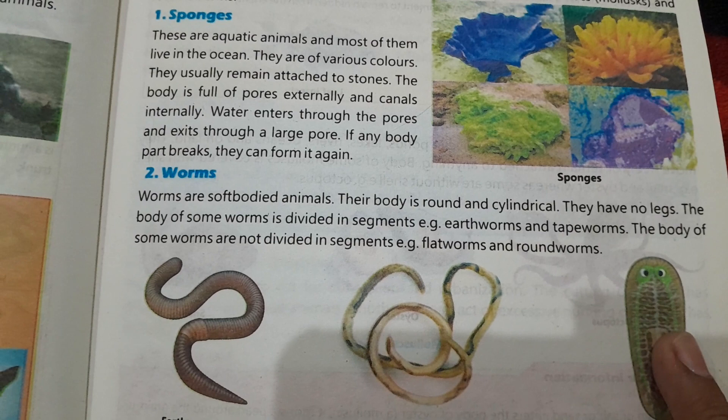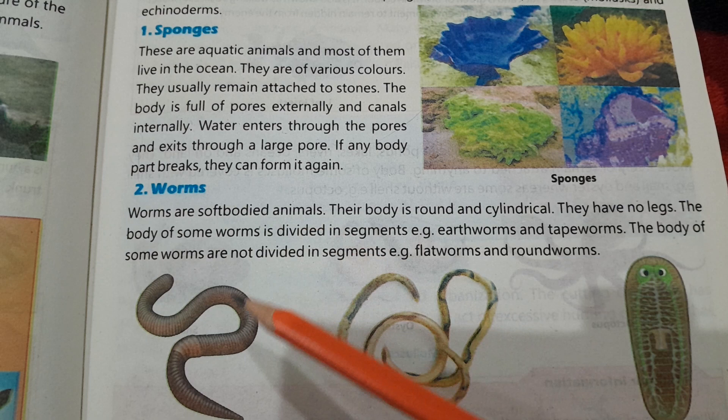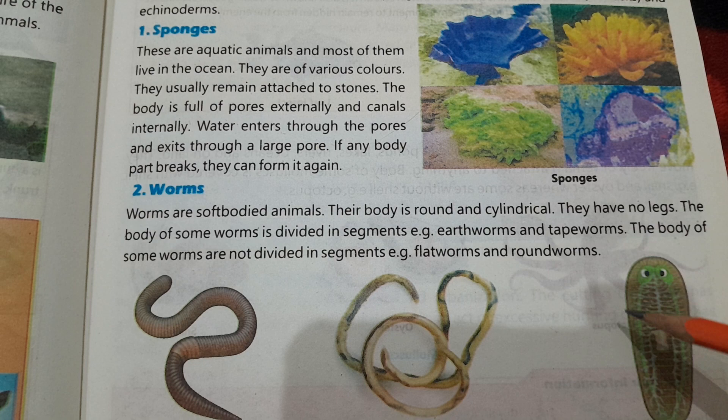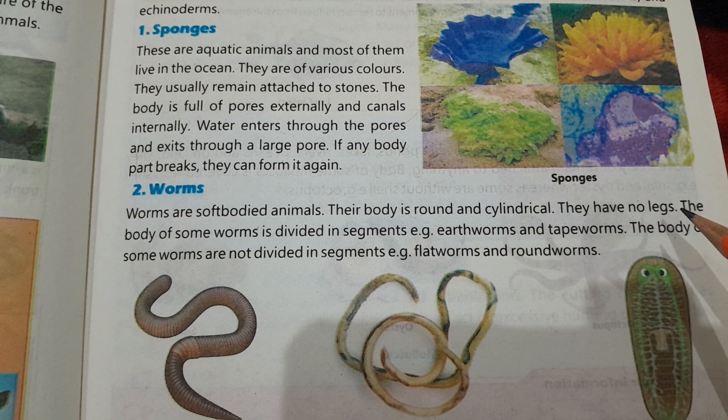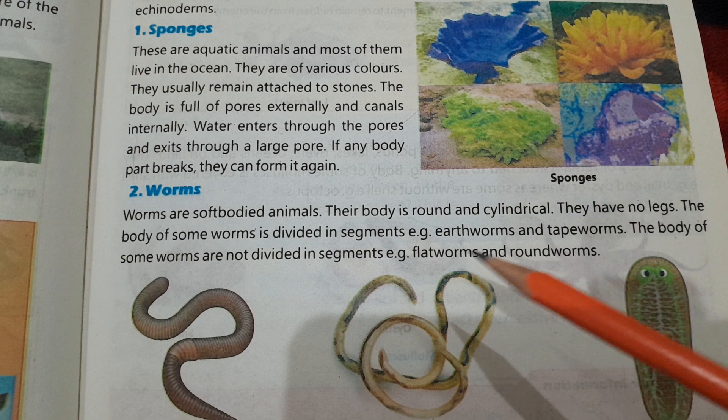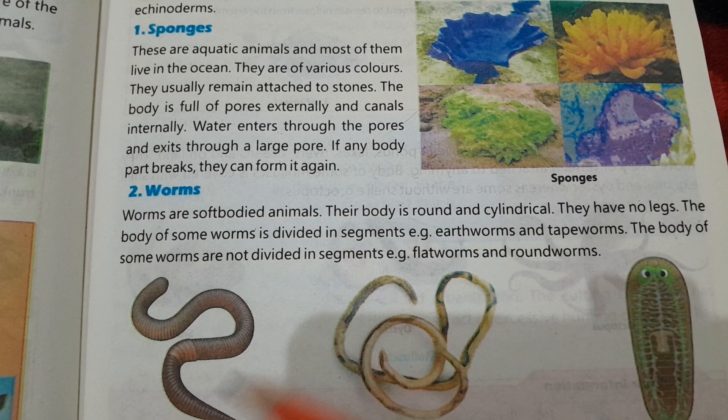Worms — کیڑوں کو worms کہتے ہیں — are soft-bodied animals. Their body is round or cylindrical. They have no legs. The body of some worms is divided into segments, for example earthworms and tapeworms.